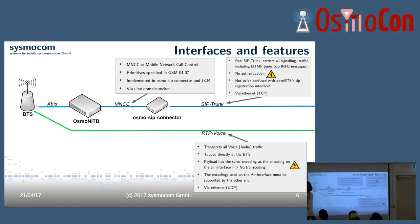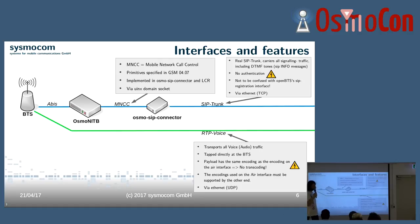Everything is happening over UDP/IP. The RTP voice stream contains all the voice traffic and is tapped directly at the BTS. Usually an RTP stream is routed from the origin to the very end, or there may be RTP proxies in between. In this simple graphic the origin is the BTS, and it's then routed to the PBX or whatever endpoint that is.